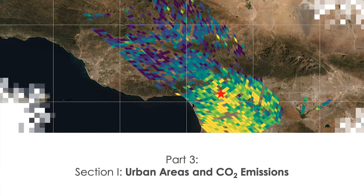Welcome everyone to part three of this training. As Erika mentioned, we'll be learning about carbon dioxide emissions and the data collected from the Orbiting Carbon Observatory 2 and Orbiting Carbon Observatory 3. Today's part will focus primarily on the data that OCO-3, which flies on the International Space Station, is collecting over large urban areas or megacities. We will talk about why this data is important, why we need to study urban emissions, and then move into the type of measurements OCO-3 provides over urban areas and how those measurements can be used to understand emissions.